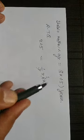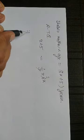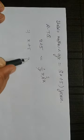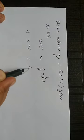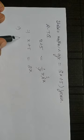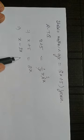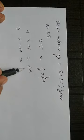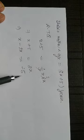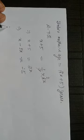After 5 years, Shobo's age will be x plus 5. According to the question, x plus 5 is equal to one-third of 6x, which is 2x. Transposing 2x to the left-hand side, it becomes minus 2x plus x plus 5 equals 0.